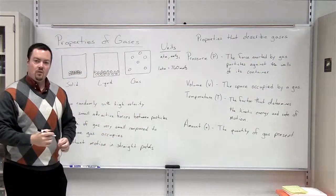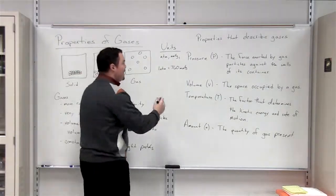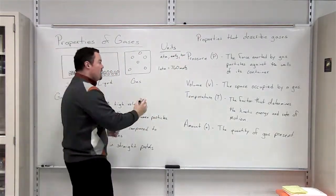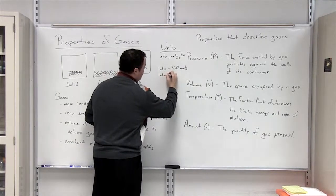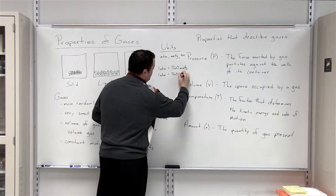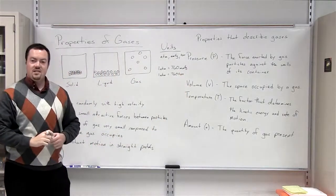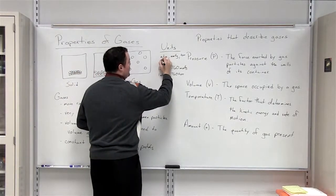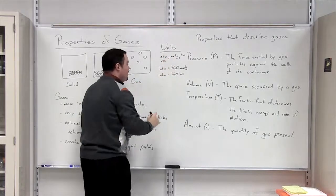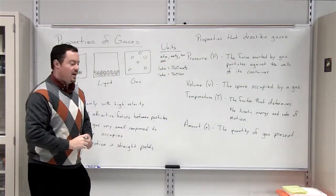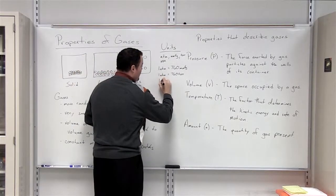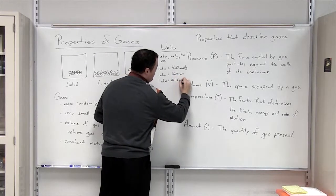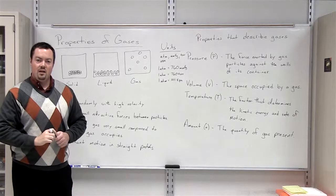Another unit for pressure that you may be familiar with, especially if you work in a hospital, is the torr. One atmosphere is also equal to seven hundred and sixty torr. Another unit is kPa, or kilopascals. When talking about kilopascals, one atmosphere is equal to one hundred and one kilopascals.